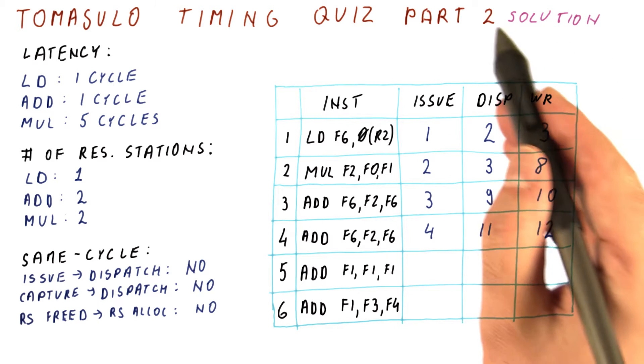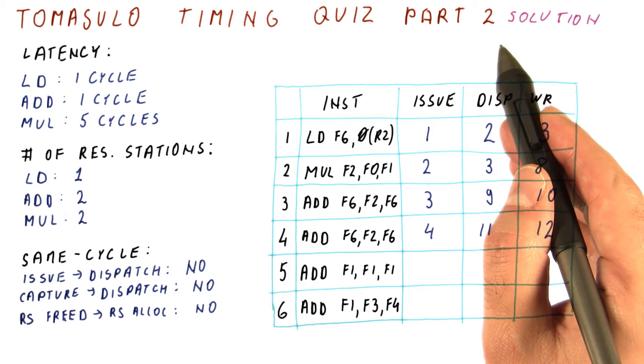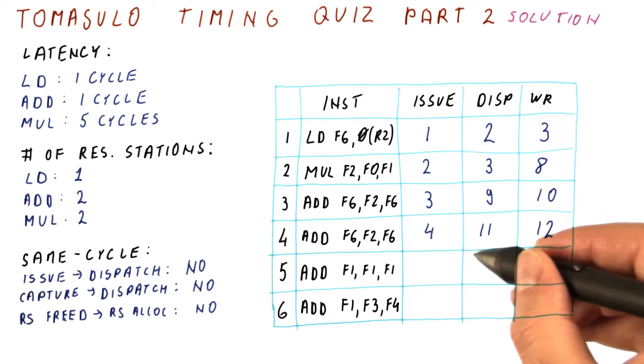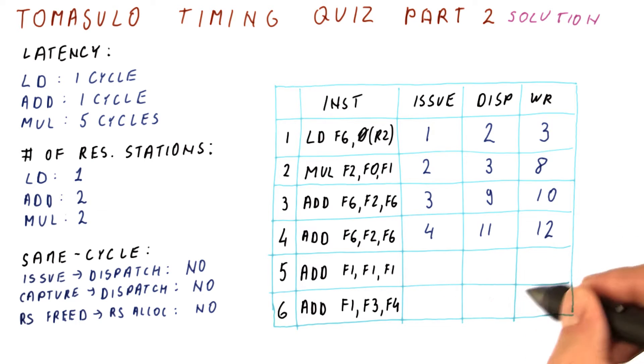Let's look at the solution to this second part of this quiz, which is about figuring out when these two instructions issue, dispatch, and write results.